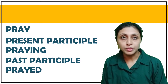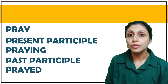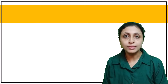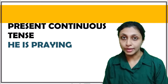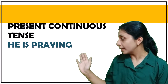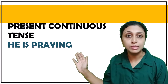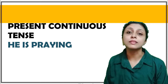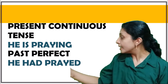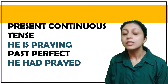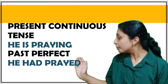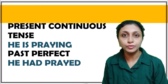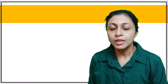Participles also form part of a verb. In the present continuous tense, it would be 'he is praying' — here 'praying' is the present participle. In 'he had prayed', 'prayed' is the past participle of the verb. Now that you've understood what a participle is, let's look at an example sentence.